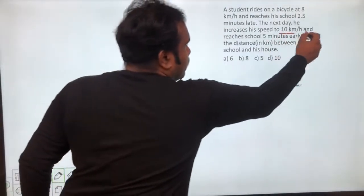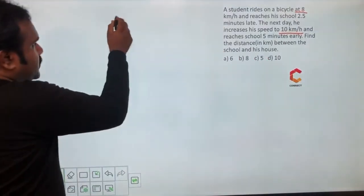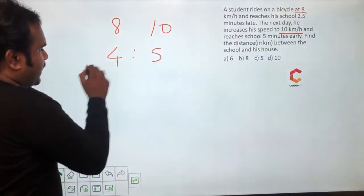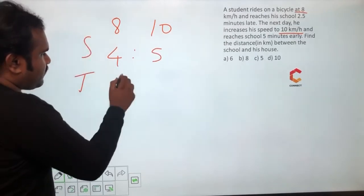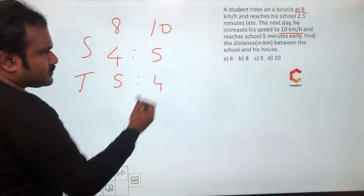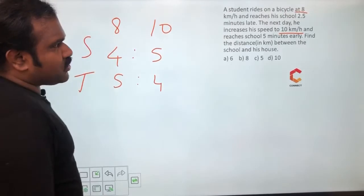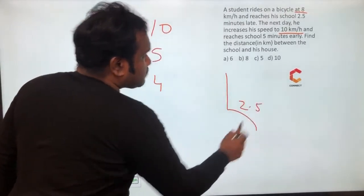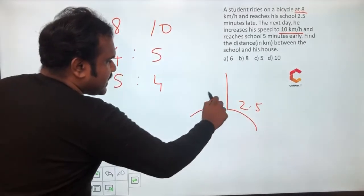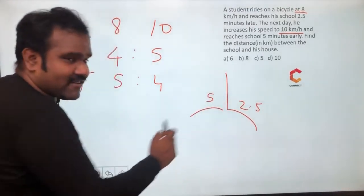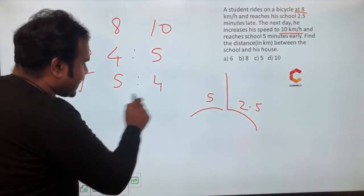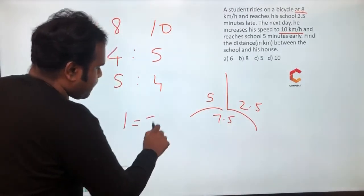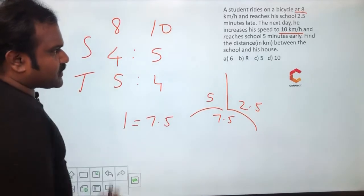Speed ratio is 8 and 10, which is 4:5. Time taken ratio will be 5:4. He is either two minutes late compared to normal time or gets five minutes early — so total time frame is 7.5 minutes. The gap is one part, so one part equals 7.5 minutes.